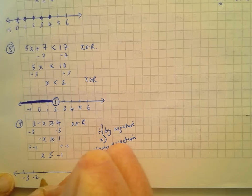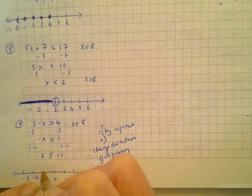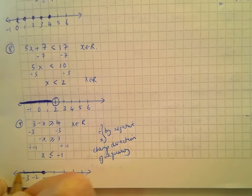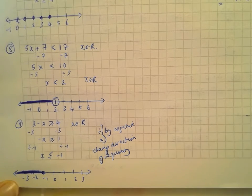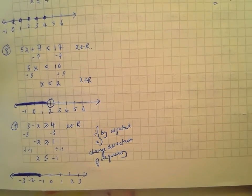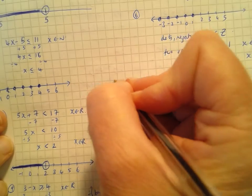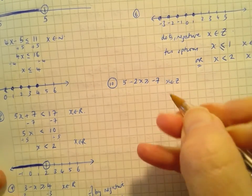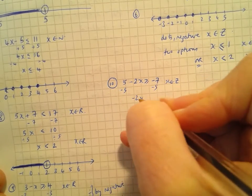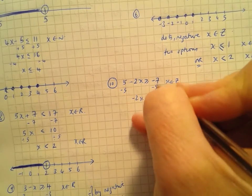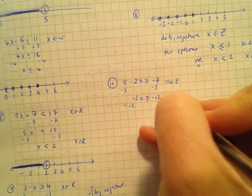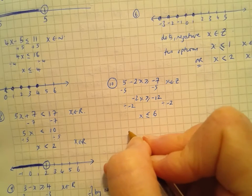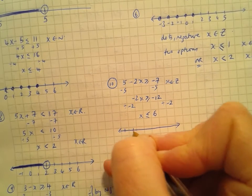Example 6: The number line has dots on 1, 0, -1, -2, -3. Dots mean Z or N, but since it includes negative numbers it must be Z. There are two possible options: x ≤ 1, x ∈ Z, or x < 2, x ∈ Z — both are valid representations.